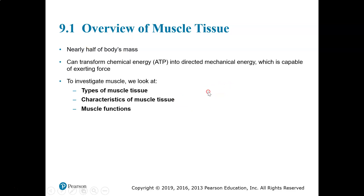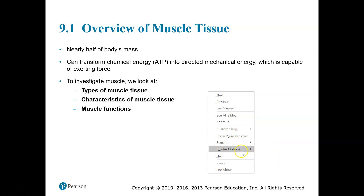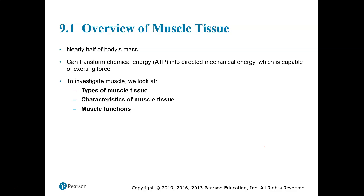Section 9.1 is an overview of muscle tissue. Muscle takes up nearly half of the body's mass. Muscle can transform chemical energy into mechanical energy, and we're talking about all types of muscle: skeletal, cardiac, and smooth muscle.